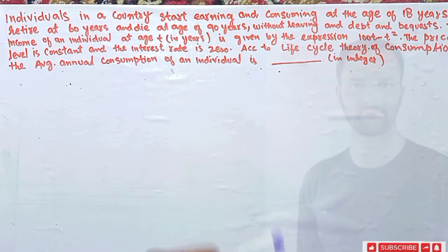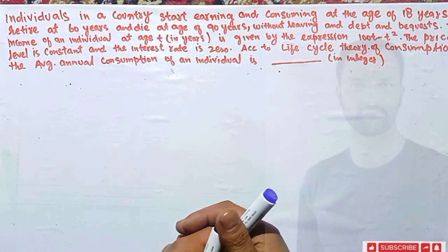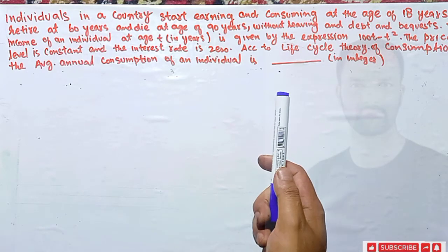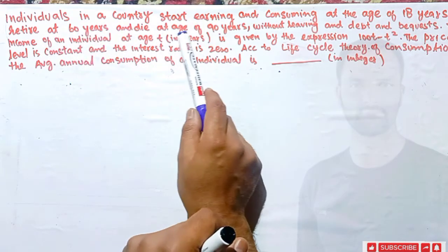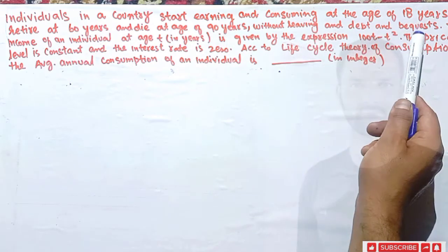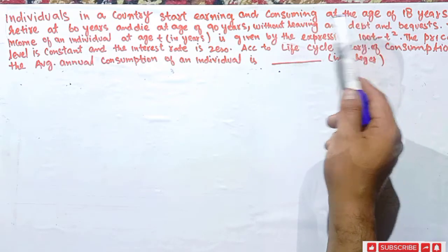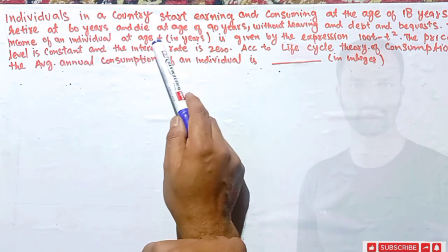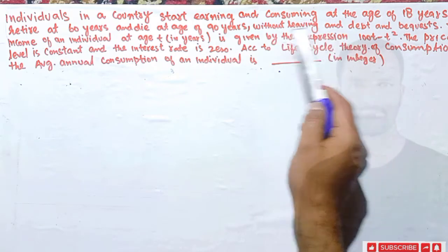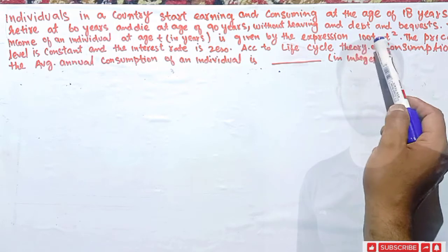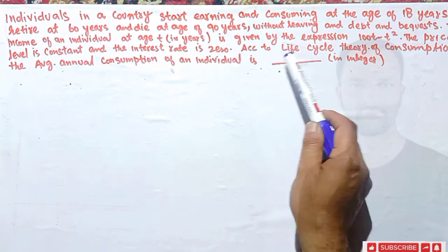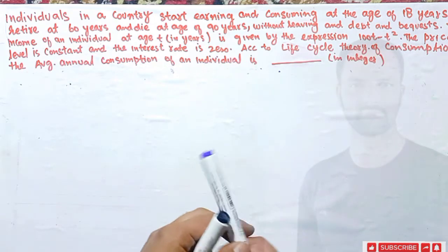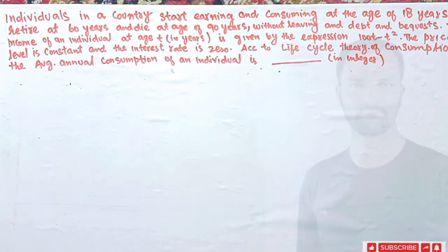Hi, this is a mathematical economics series video where we will try to solve a problem from the JAM Economics paper of 2021 about the life cycle hypothesis. The question states: individuals in a country start earning and consuming at the age of 18 years, retire at the age of 60 years, and die at the age of 90 years without leaving any debt or bequest. According to the life cycle theory of consumption, we have to find the average annual consumption of the individual.